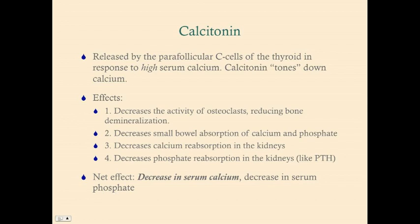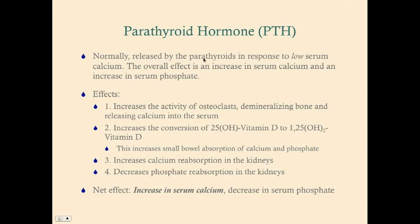Extremely high calcitonin levels causing clinically meaningful phosphate changes are very rare and not seen in primary disease states. Parathyroid hormone, on the other hand, can be secreted in large amounts from the parathyroids as a primary process — called primary hyperparathyroidism — which would cause a significant decrease in serum phosphate.